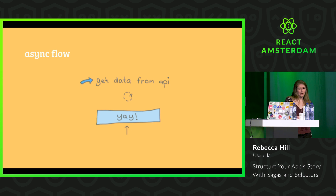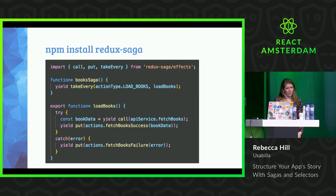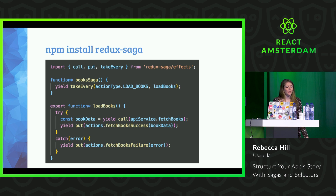Let's look at async logic. What's the best way to retrieve our array of books in the first place? Well, for smaller Redux apps, the sensible choice is Redux Thunk. But often I find that my apps get to a size and complexity where this doesn't really work for me anymore. So my go-to solution is Redux Saga. Saga is actually an old Norse word which means a long, dramatic story — so pretty applicable, though not to this talk, because it's a very short talk.